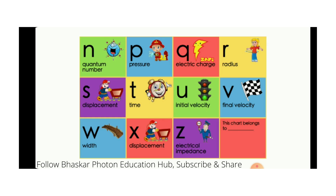W is the width. X is the displacement. Z is the electric impedance. There may be some other terms that also come up, but mostly these are the basic physics alphabets which are very much required and useful for daily study.